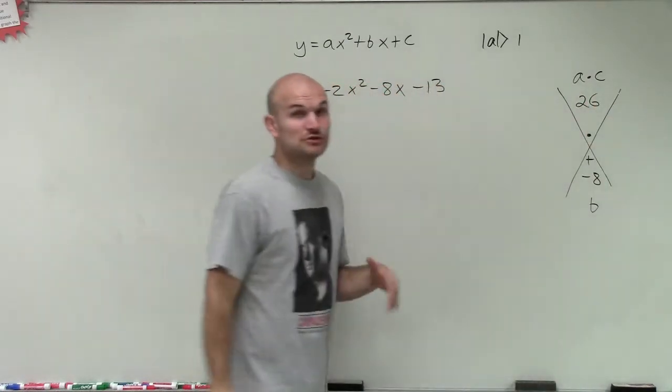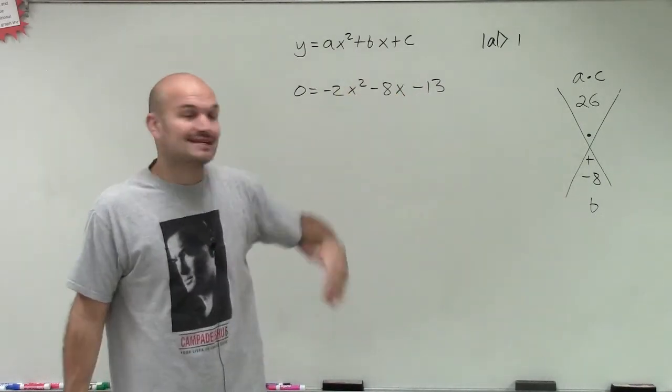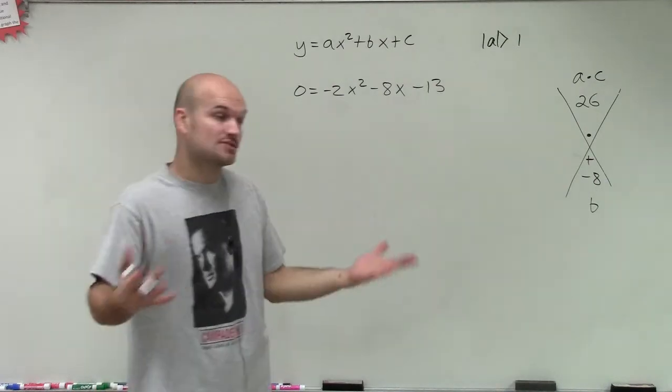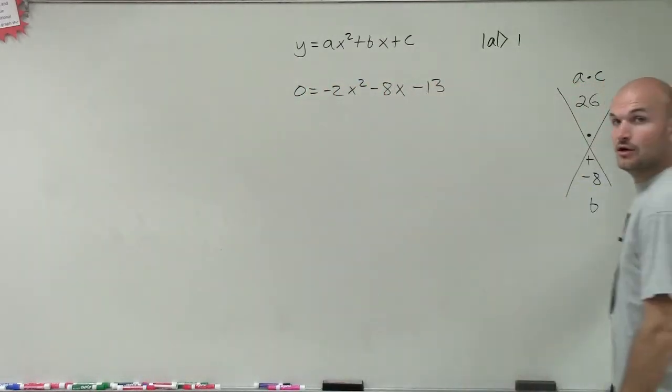So now what I need to do is determine what two values multiply to give me negative 26, but then add to give me negative 8. So let's just kind of go through some values here. Let's factor out the 26.